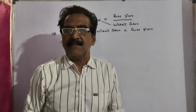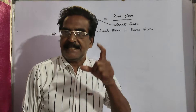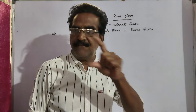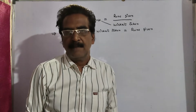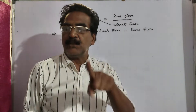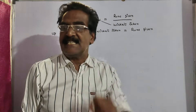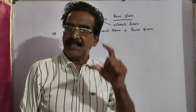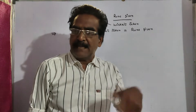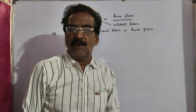Hi friends, good morning. Please look at the next problem in averages. A cricketer whose bowling average is 24.85 takes 5 wickets for 52 runs in the next match, thereby decreasing his average by 0.85. Find the number of wickets taken by him up to the last match.